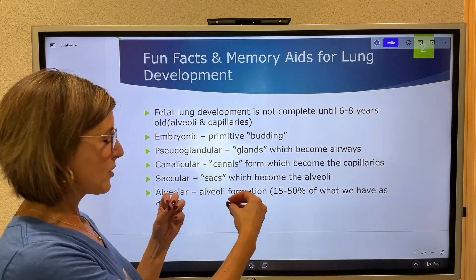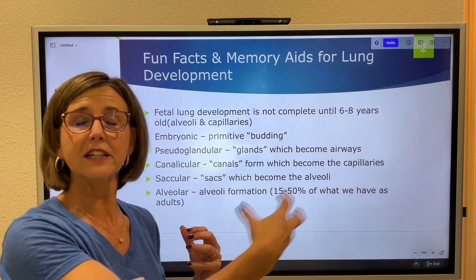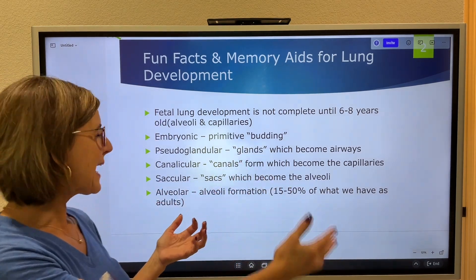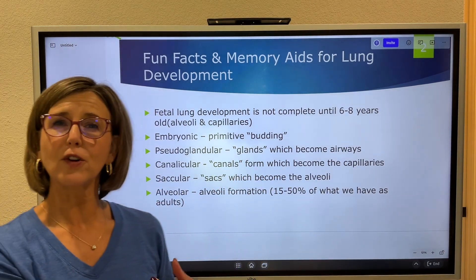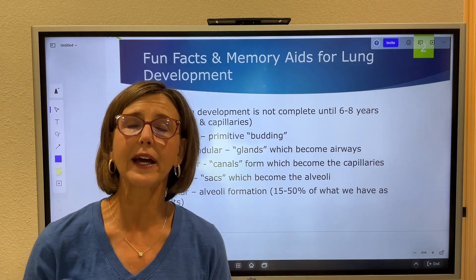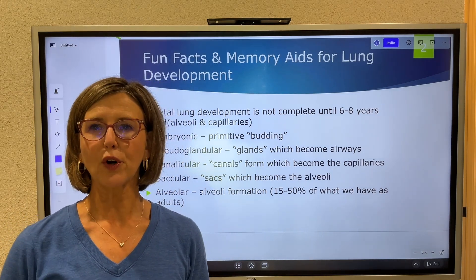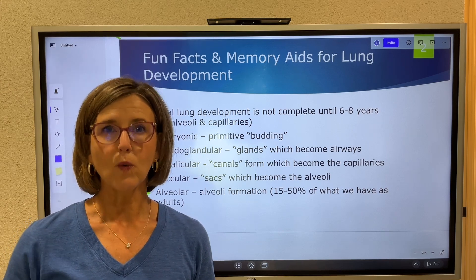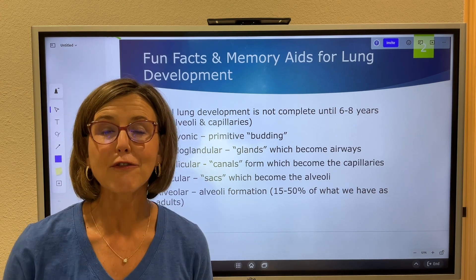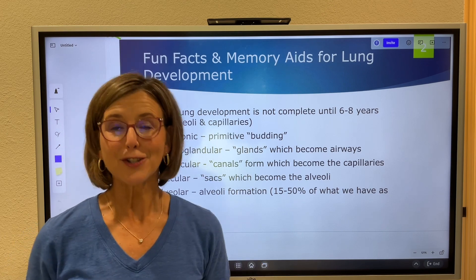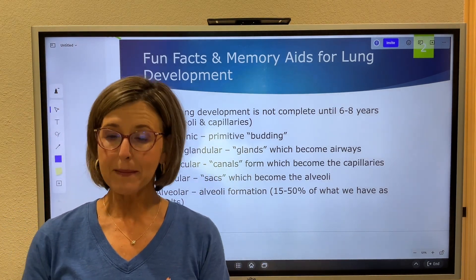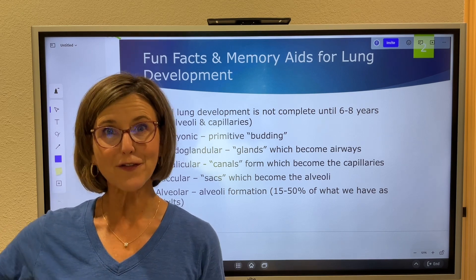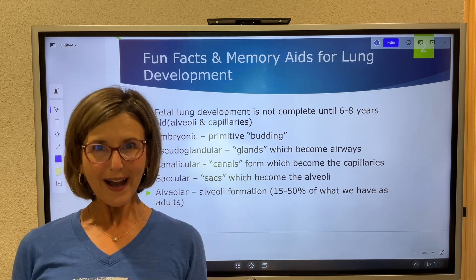The baby only has about 15 to 50% of the alveoli we have at birth. According to Walsh's textbook, the baby has about 50 million alveoli when delivered, but we have 300 million. So through age six to eight years, that growing child has to develop 250 million alveoli — pretty remarkable.